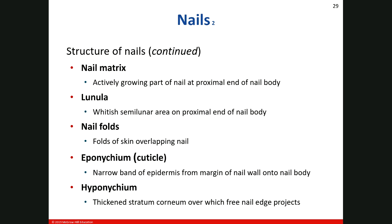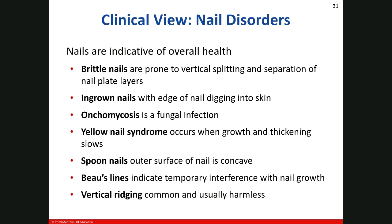Nails are a really good indicator of health and nutrition. The condition of nails — if people usually have poor nutrition, for example, it will eventually reflect in their nails. If their diet is poor, they could have brittle nails.